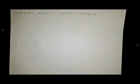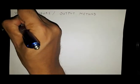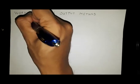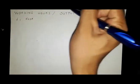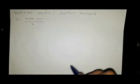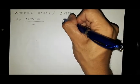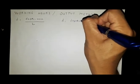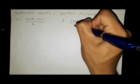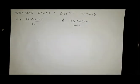The working hours and output method of depreciation are depreciation methods that are very similar to the straight-line method. The only difference here is your D refers to the depreciation per hour for the working hours method, while for the output method, D refers to the depreciation per unit.